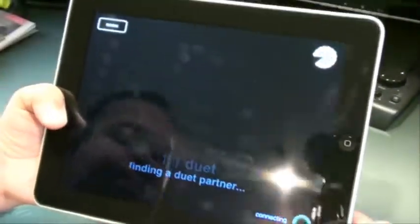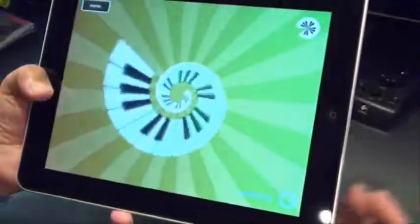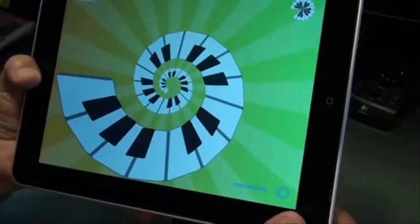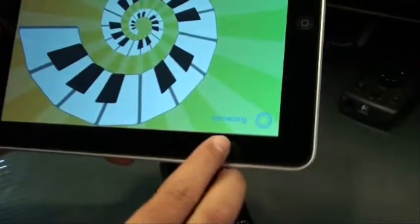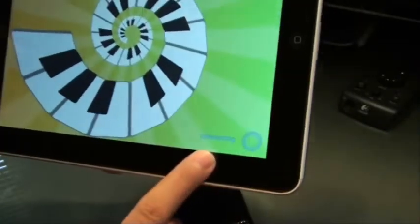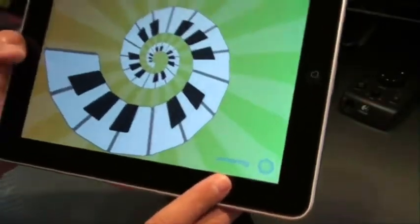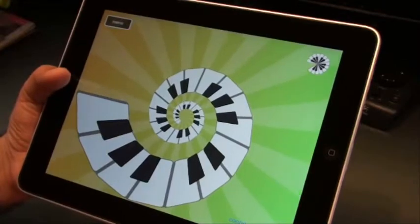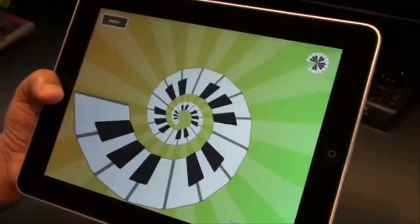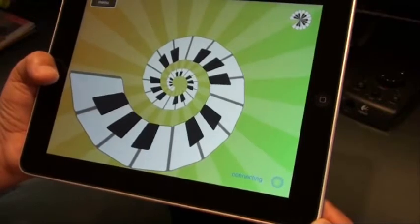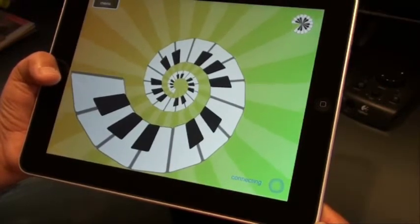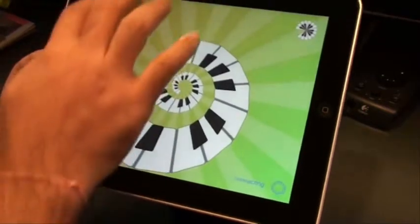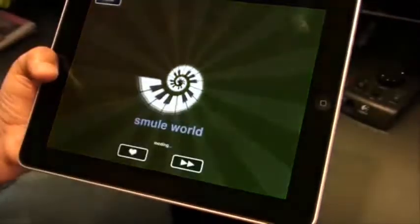The next option is Duet. What this option does is it actually lets you connect with another person who is using the application at this moment. As you can see, it says connecting. So it is actually trying to find a person who is using this application right now. It sometimes takes a while, so it does take some time to connect to somebody who is playing it. We'll try and come back to this particular option. Let's look at the other ones right now.